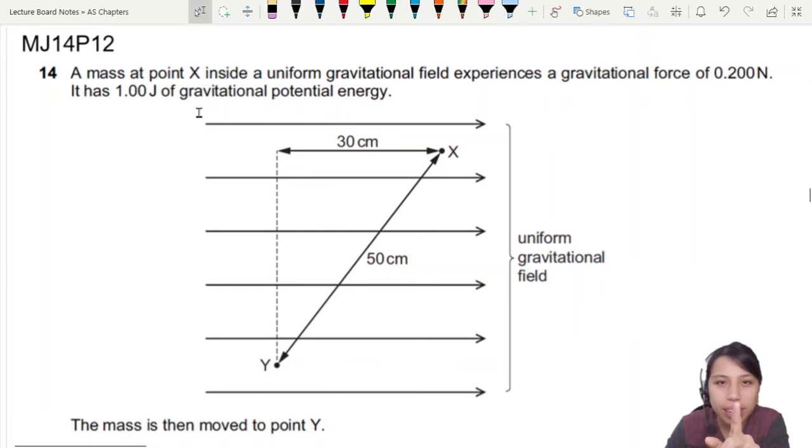A mass at point X inside a uniform gravitational field experiences a gravitational force of 0.2N. Look at this diagram. Got gravitational field line and then got force. Wait a second, why is it sideways? Okay, never mind. It has 1 joule of GPE.